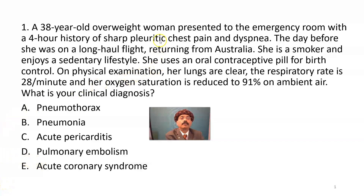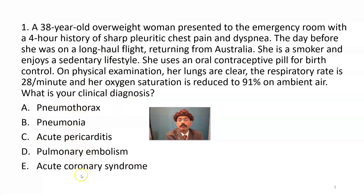She has pleuritic chest pain. She has dyspnea. She has low oxygen saturation and increased respiratory rate — it is called tachypnea. She had a long-haul flight from Australia, which may take around 17 to 18 hours. The choices are: pneumothorax, pneumonia, acute pericarditis, pulmonary embolism, and acute coronary syndrome. These are all the differential diagnoses. The answer should be pulmonary embolism.